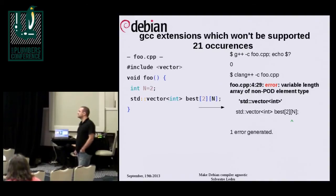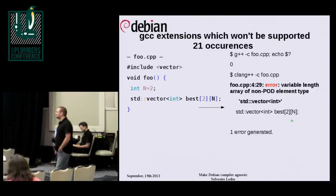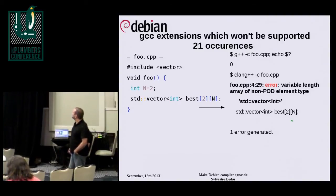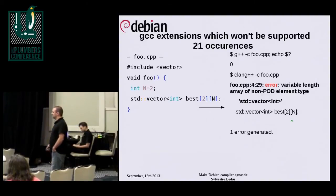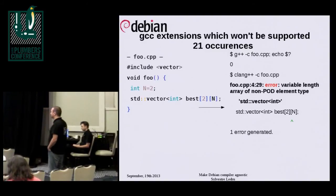That code with an array of vectors is actually valid in C++14. I don't know why somebody would do an array of vectors, but I'm pretty sure GCC is not wrong — it's just allowing something that's now in the standard. Maybe G++ implemented something they're going to put into the next standard.